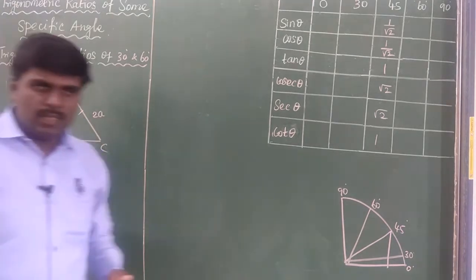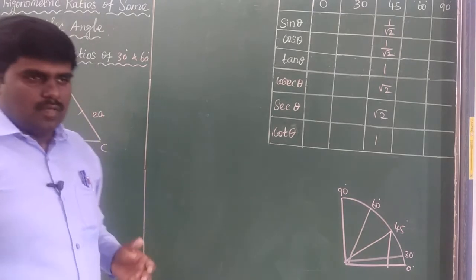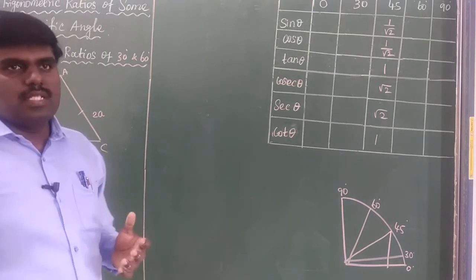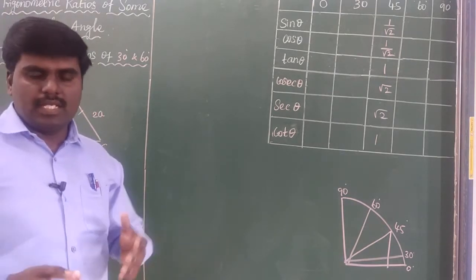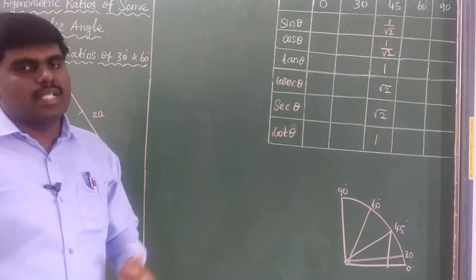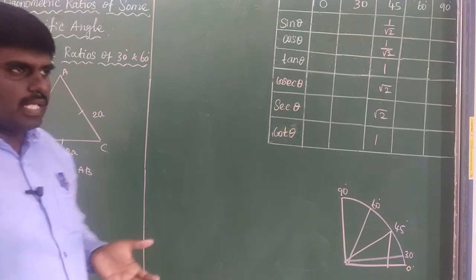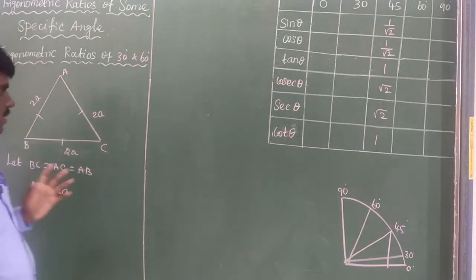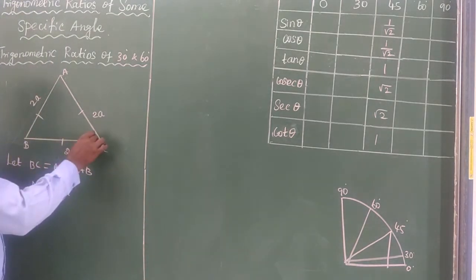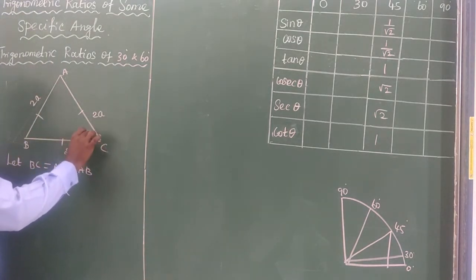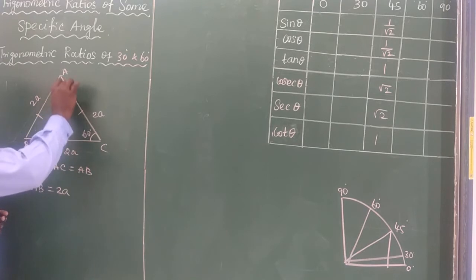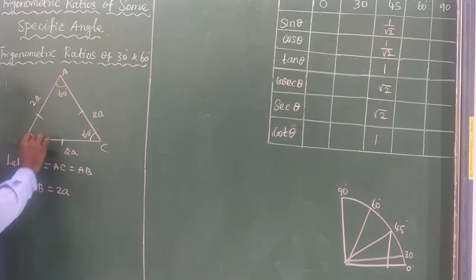For an equilateral triangle, we know that the sum of the interior angles of a triangle is equal to 180 degrees, so each angle is 60 degrees. Each angle of the equilateral triangle should be 60 degrees.